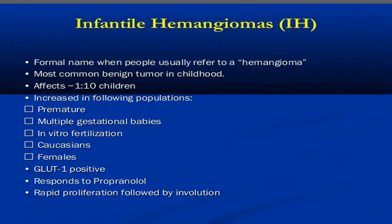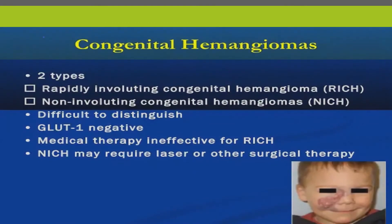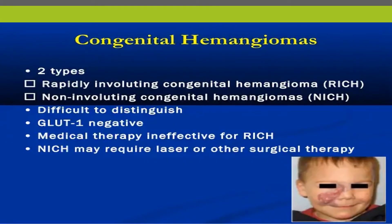The most common benign tumor in childhood is infantile hemangioma — when people say 'hemangioma,' they are most often referring to this. It affects one in ten children and is increased in premature births, multiple gestations, twins, in vitro fertilization babies, Caucasians, and females. GLUT1 is positive most of the time, and they respond to propranolol very well, with rapid proliferation followed by involution phases.